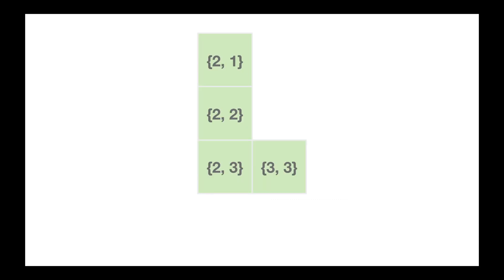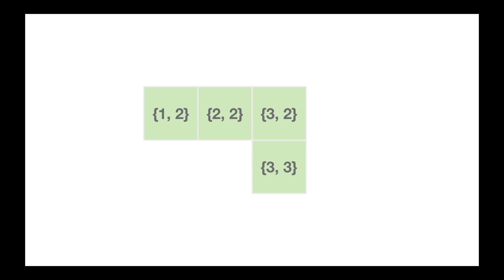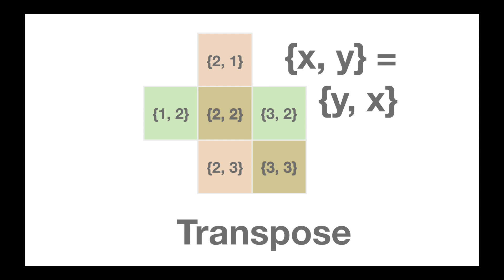The last one is called transpose and it's interesting. What we're actually trying to do is take a shape that looks like this and turn it into a shape that looks like this. We're basically mirroring across the line that stretches from (0,0) to (4,4) on our table. The formula turns out to be strikingly simple: we turn x,y into y,x. And we're going to call that a transpose.